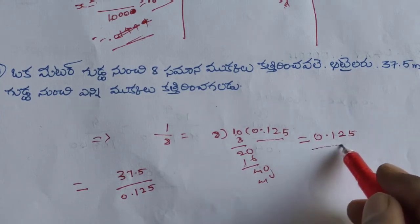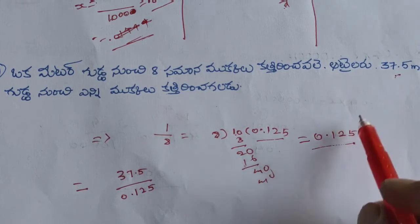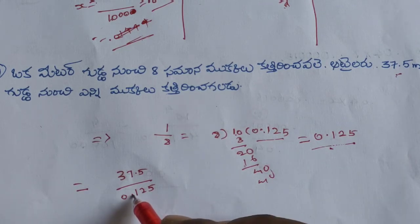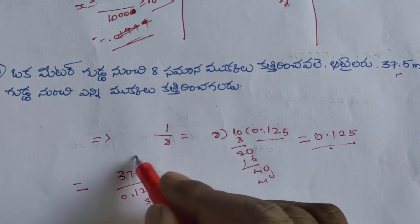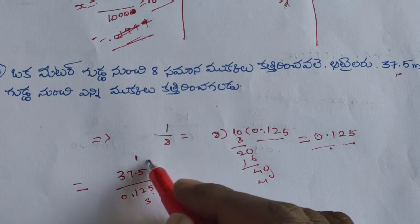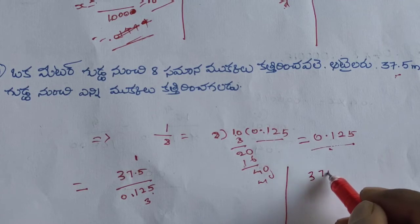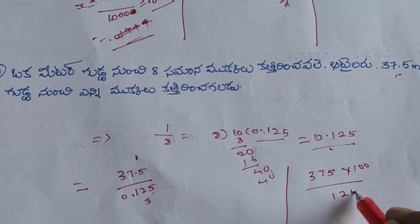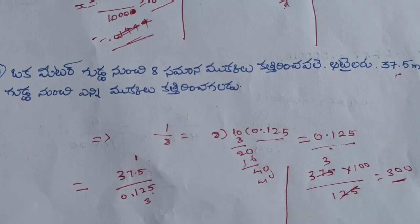If you want to find the right-hand side value, it is 27. Square and pi into 100 gives the result equal to 375 into 100 by 125 — equals 300. Simplifying: result is 3.